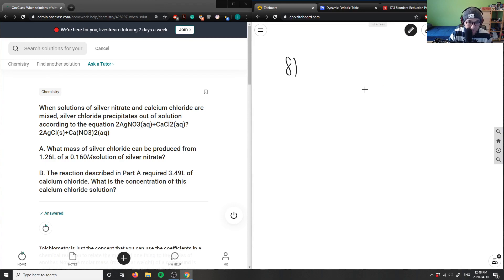So let me just write this down. I have 2AgNO3 + CaCl2 gives me 2AgCl + Ca(NO3)2 here. What mass of silver chloride can be produced from 1.26 liters of a 0.160 molar solution of silver nitrate? So silver nitrate was this guy here.